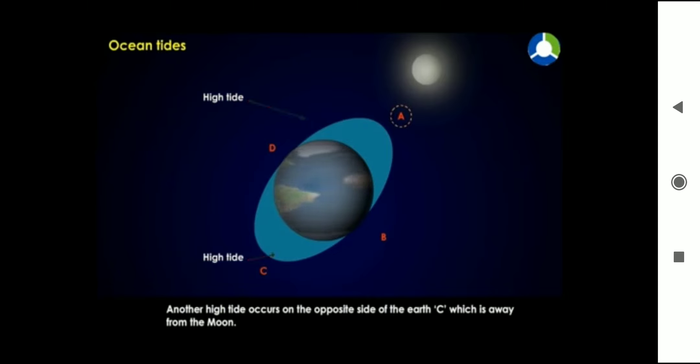Another high tide occurs on the opposite side of the earth, point C, which is away from the moon.